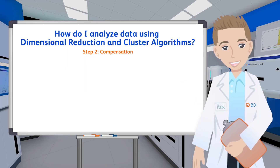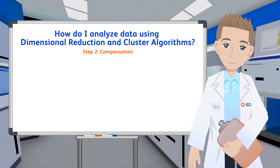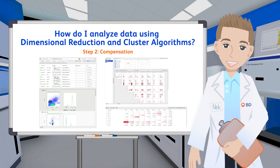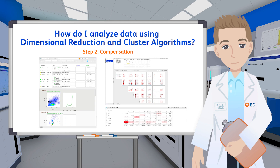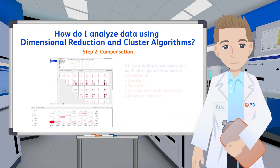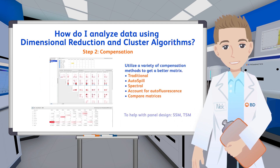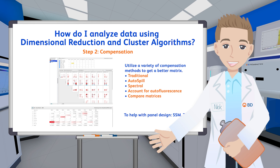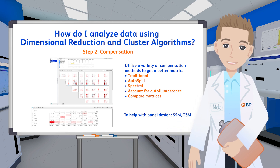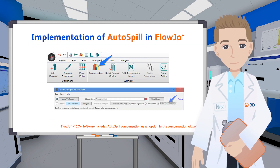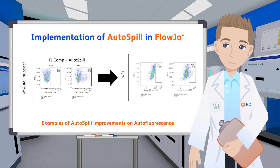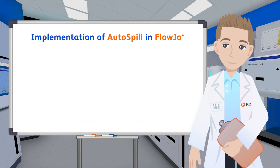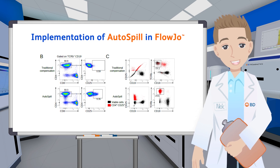The second step is Compensation — it is absolutely key to any high-dimensional analysis. As we add more markers, the complexity of our panel threatens to become unwieldy. The Compensation platform built into FlowJo is quite flexible, permitting spectral unmixing with or without a whitening channel. You can also choose between the traditional method of compensation or using the newer AutoSpill/AutoSpread method. The AutoSpill method has the advantage of being able to subtract out autofluorescence. You can even compare matrices using various methods to determine which works best.